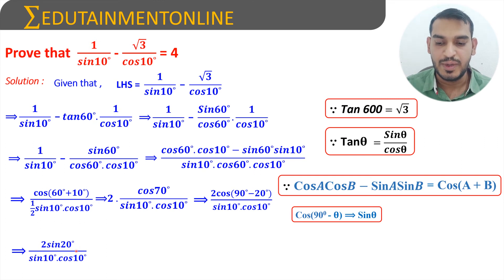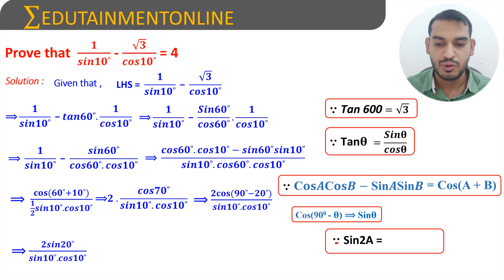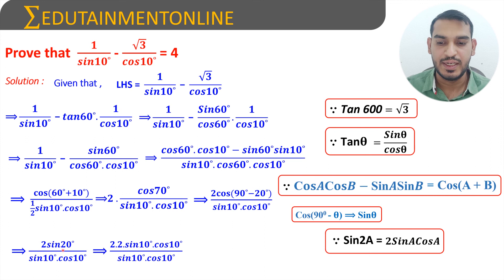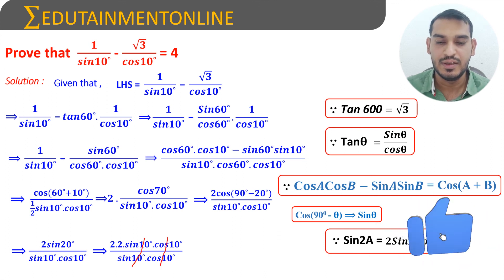Now we expand sin 20 degrees using the double angle formula: sin 2A equals 2 sin A cos A. So sin 20 degrees equals 2 sin 10 degrees into cos 10 degrees. Substituting and cancelling sine 10 degrees with sine 10 degrees, and cos 10 degrees with cos 10 degrees, we get 2 times 2, which equals 4.